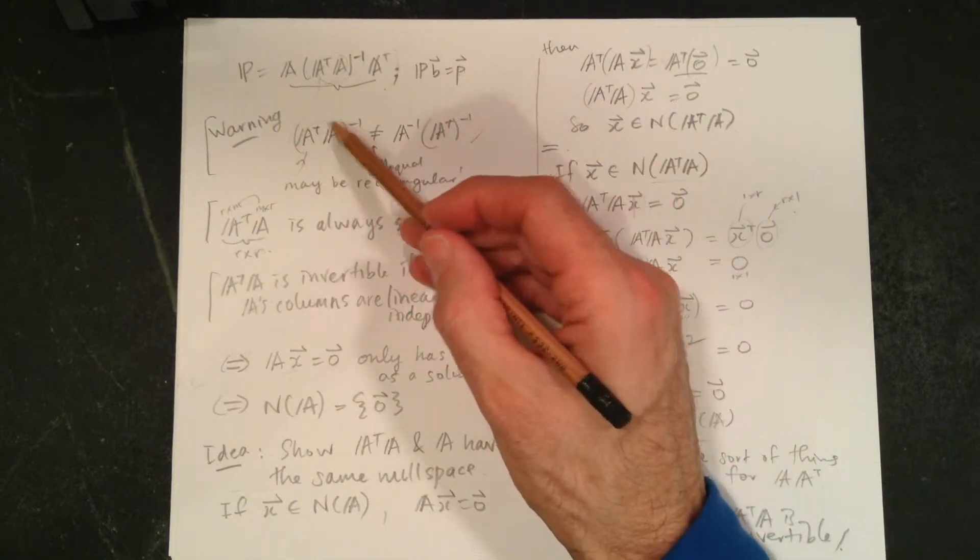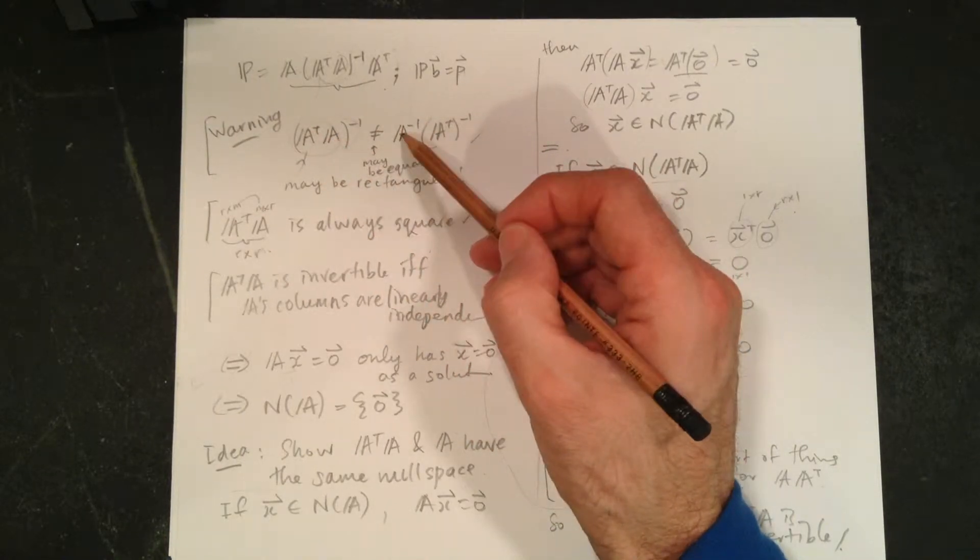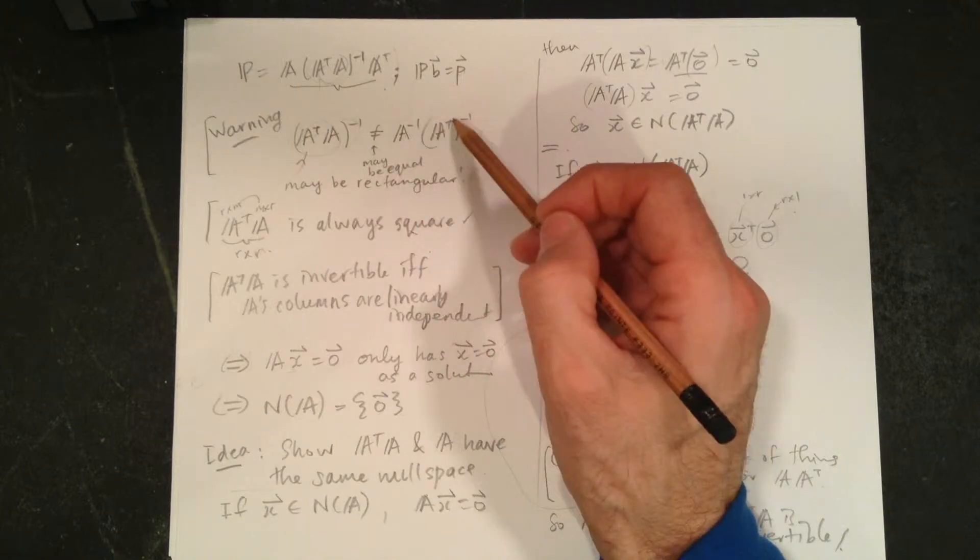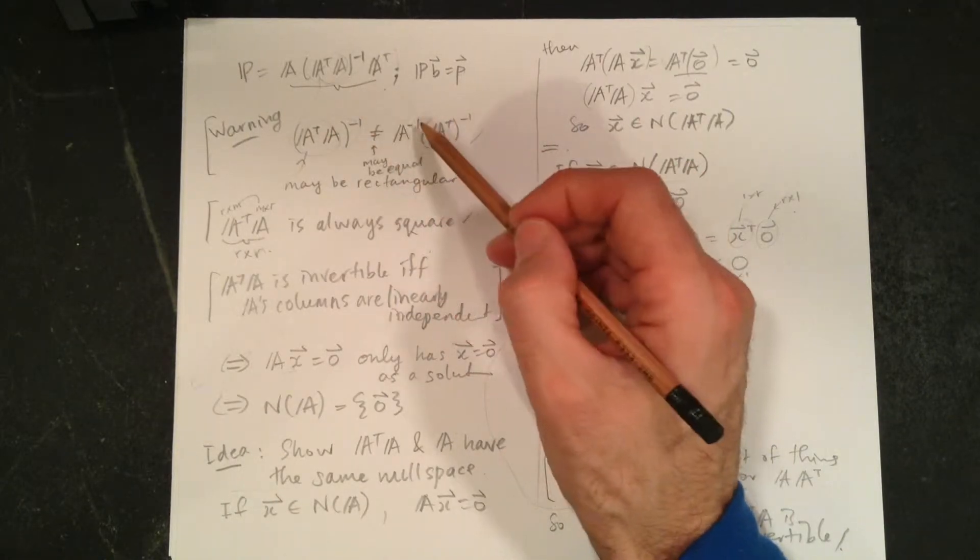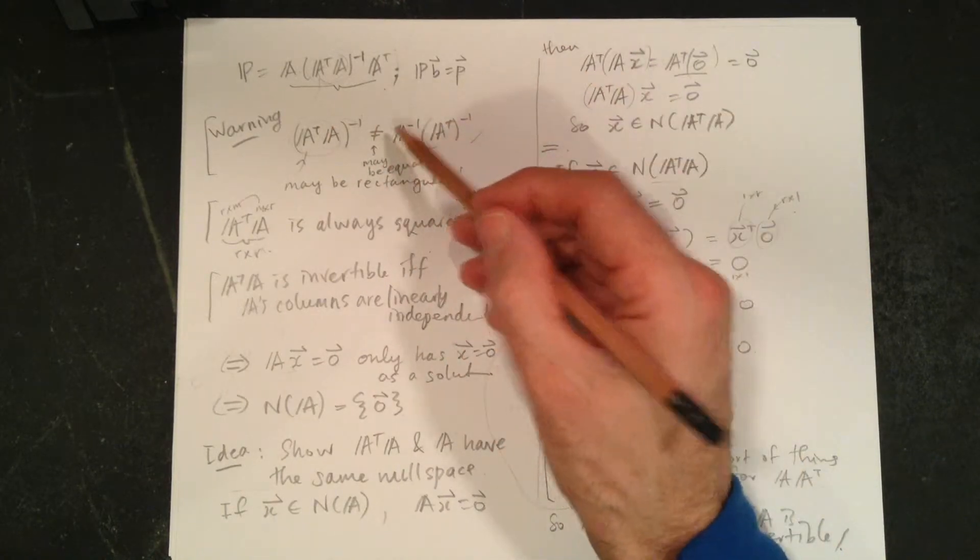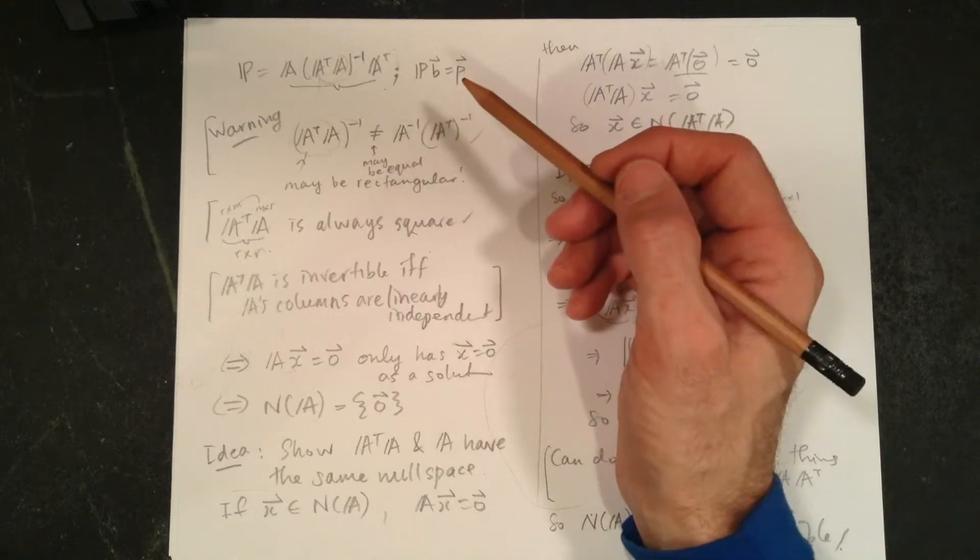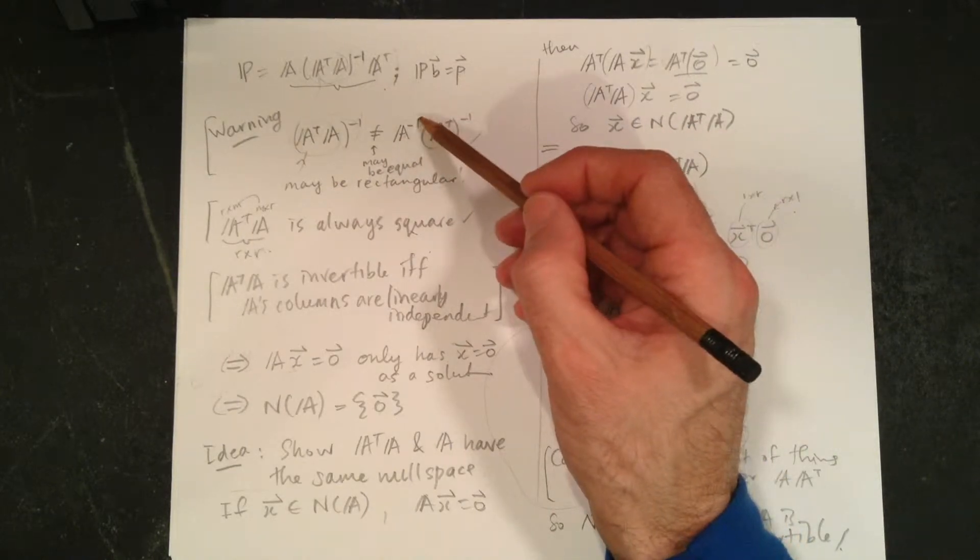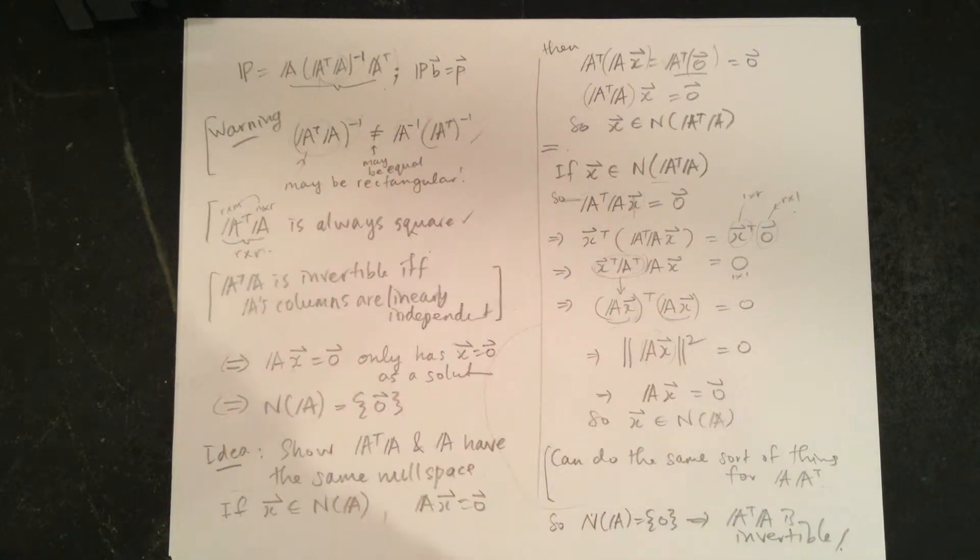Here's a little warning to start with. A transpose A - it looks like you might be able to do this: you could put the A here with an inverse and A transpose over here with an inverse. BC inverse is C inverse B inverse. That might be tempting, but these can be rectangular. This is M by R, that's a bad plan. These guys might not have - so this is just a bad idea. Let's get that out of the way.